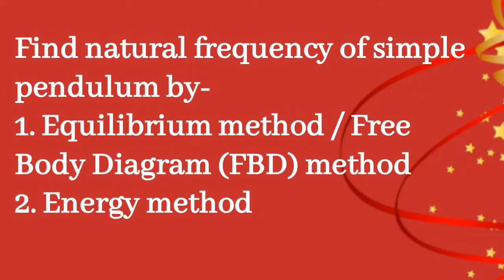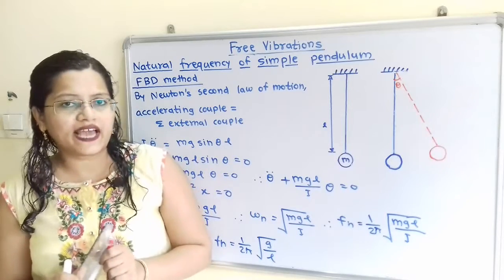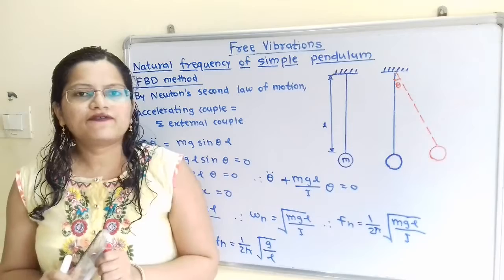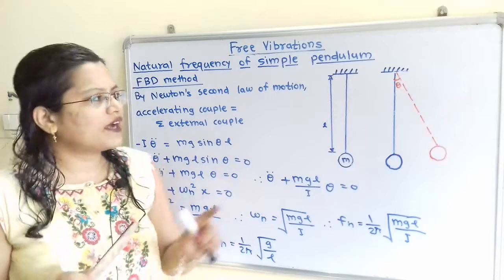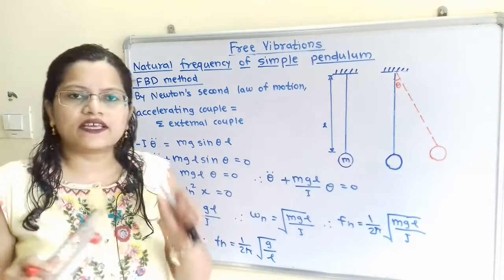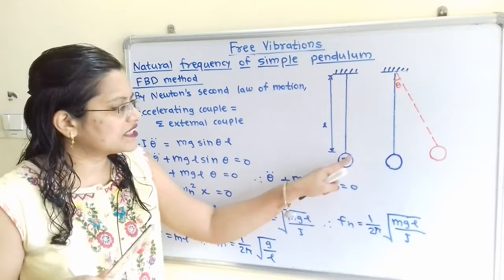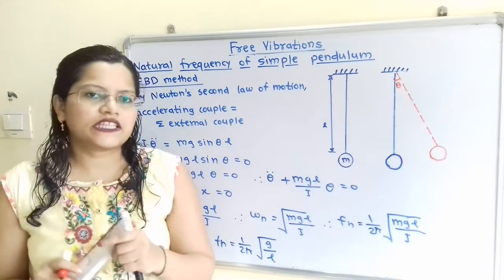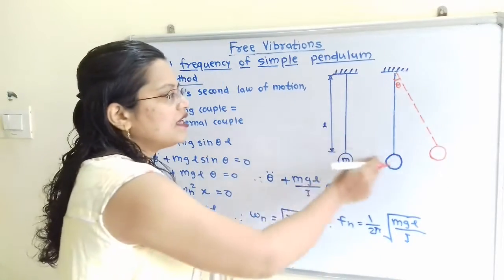We will find the natural frequency of a simple pendulum by two methods: first, the equilibrium method or free body diagram (FBD) method, and second, the energy method. For the FBD method, we observe the diagram of a simple pendulum: there is a string of length L with one end fixed and at the other end is a bob of mass M. To find the natural frequency, we first displace this bob through an angle theta.